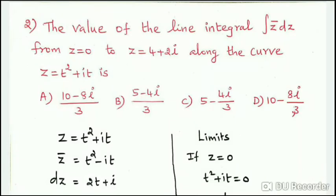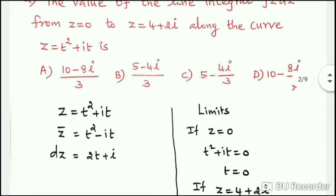Next question: the value of the line integral of z̄ dz from z = 0 to z = 4 + 2i along the curve z = t² + it. The limits are z = 0 and z = 4 + 2i.